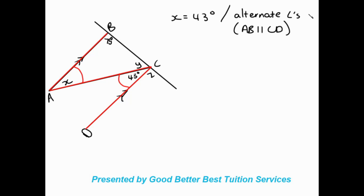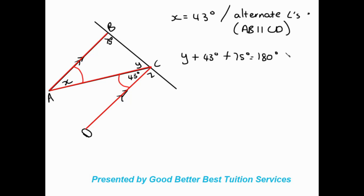Remember, alternate angles rely on parallel lines, so we say AB is parallel to CD. So here we have our statement and our reason, stating which lines are parallel. Carrying on, let's try and find y. There are two ways we can go about this. The first way: y forms part of a triangle, and we know that in a triangle all the angles add up to 180 degrees. So we're going to say y plus x (which is 43 degrees) plus 75 degrees is equal to 180 degrees.